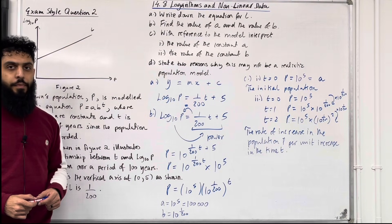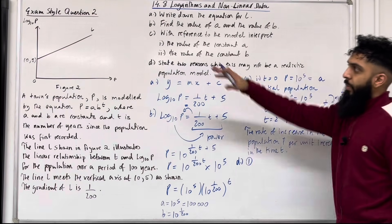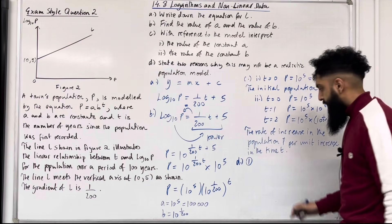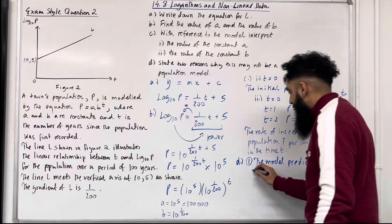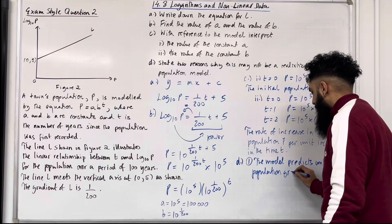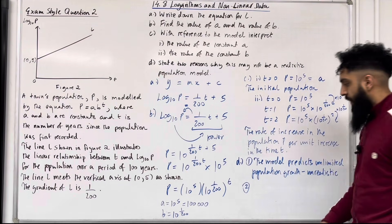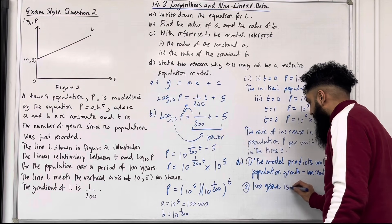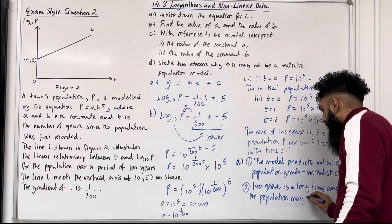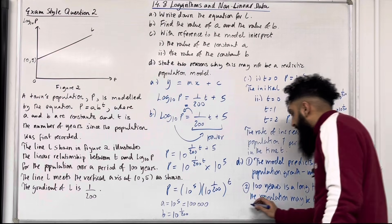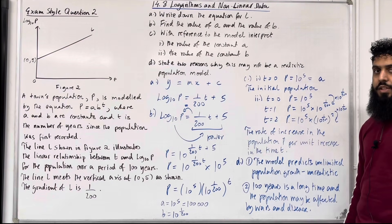Part D: state two reasons why this may not be a realistic population model. Reason 1: the model predicts unlimited population growth, which is unrealistic. Reason 2: 100 years is a long time, and the population may be affected by wars and disease, which the model does not take into account.